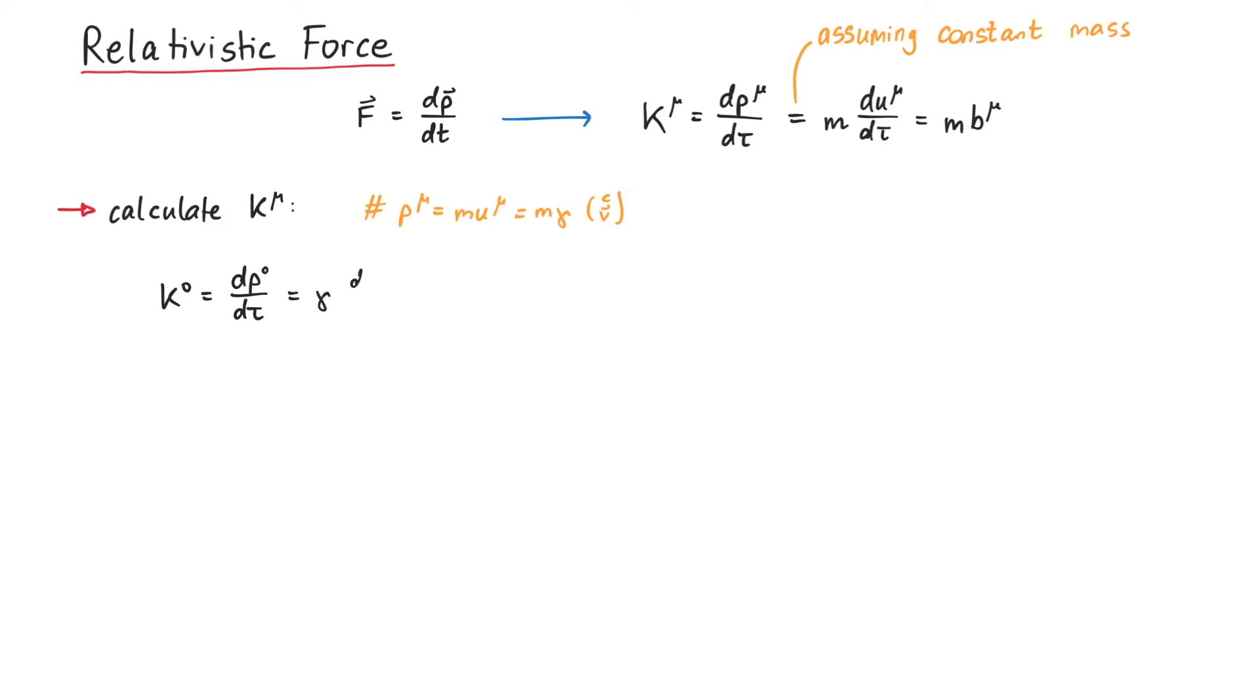This can be written as gamma times a regular time derivative of m gamma c. For constant time-independent mass, we can write this as gamma to the power of 4 times mass times the inner product of v and a over c.